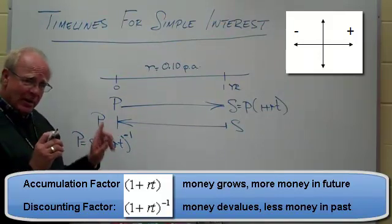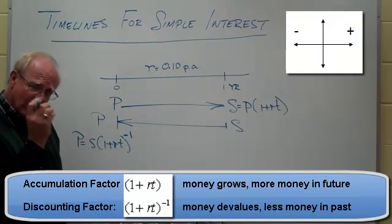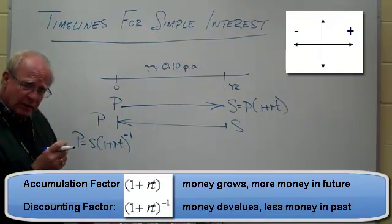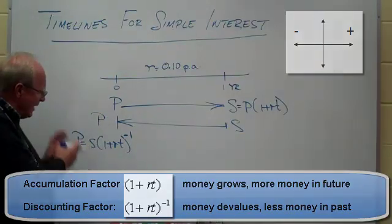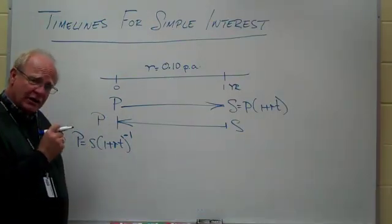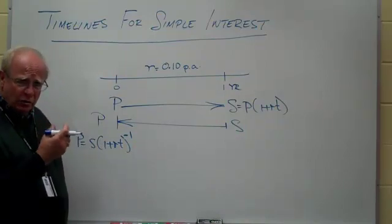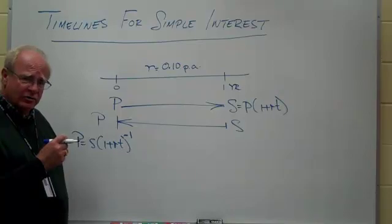So recapping, when money goes ahead in time, it's going to normally get larger in size. A greater amount is required. When money goes back in time, it gets smaller. Less money is required to do exactly the same thing. So try this with some examples, and your instructor will explain more in class. Thank you very much.